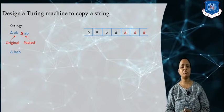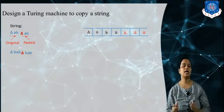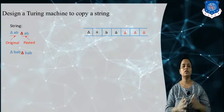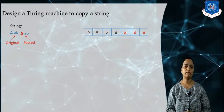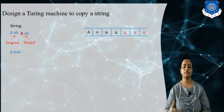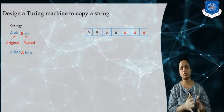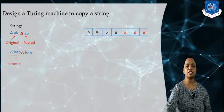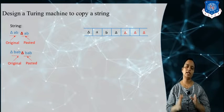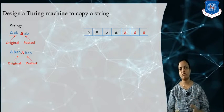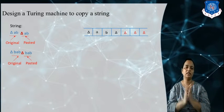Similarly, if my input string is delta double-a b, then my duplicate string is delta b a b. So my input string delta b a b is the original and my duplicate string delta b a b is the copy. The first is my original string and the second is my pasted string. This is the meaning of copy string — we exactly generate a copy of the input string.